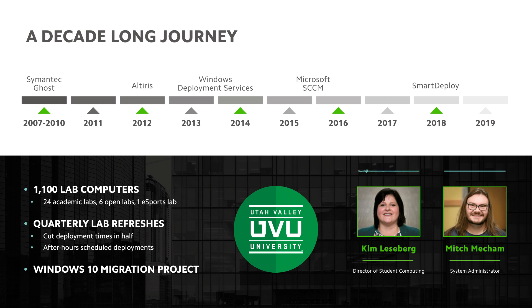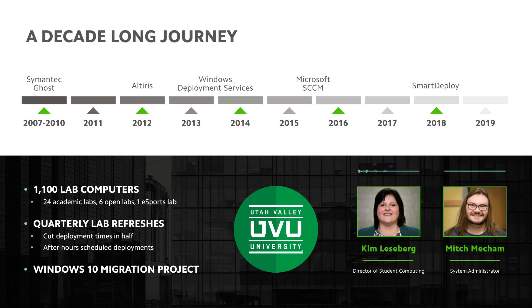Our responsibilities consist of six open labs where any student can come and use the computers, and 24 academic labs for specific classes that are offered. We also support and maintain student printing campus-wide, including mobile printing. Our computer life cycle replacement is approximately every four to five years, and we re-image at least one to two times a year or more depending on student need.